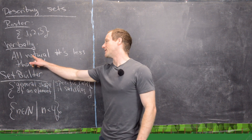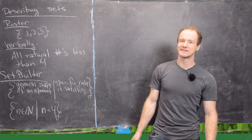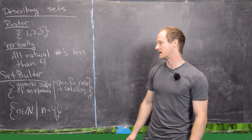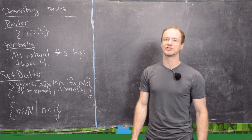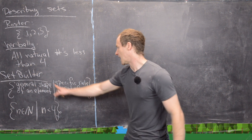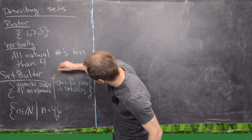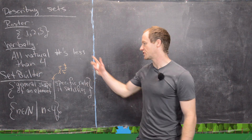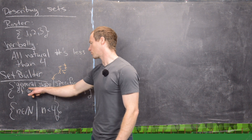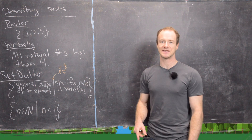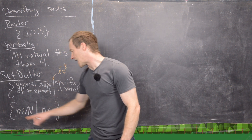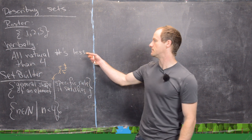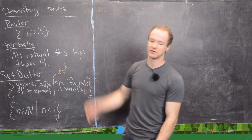Second, we can describe a set verbally. For example, {1, 2, 3} could be described as 'all natural numbers less than four.' Third, and most useful mathematically, is set builder notation. It uses curly braces with a vertical line (or colon) meaning 'such that.' On the left you write the general shape of an element; on the right, the specific rule it satisfies. For example: {n ∈ ℕ | n < 4} reads as 'n is a natural number such that n is less than four.'